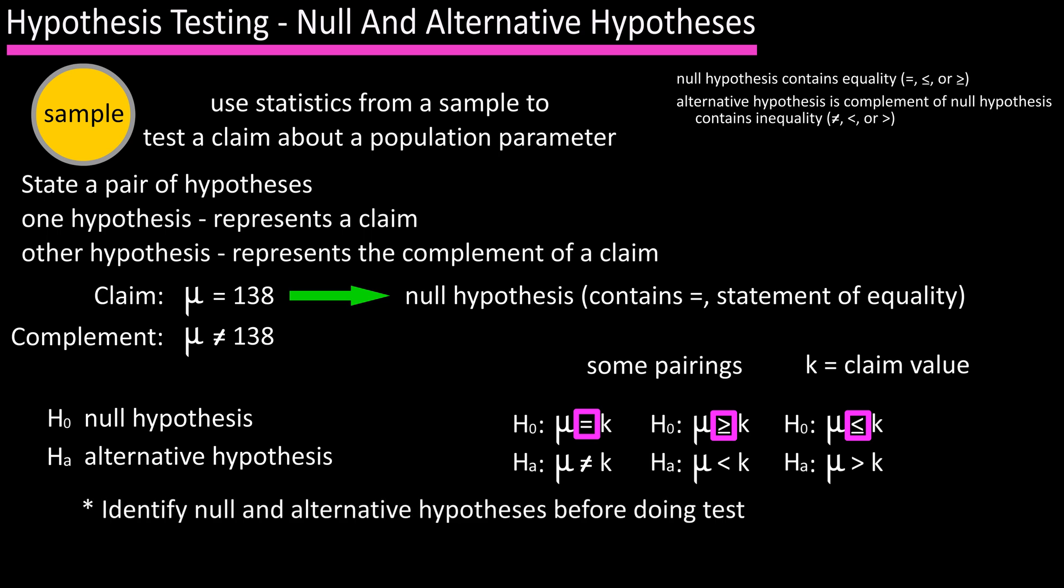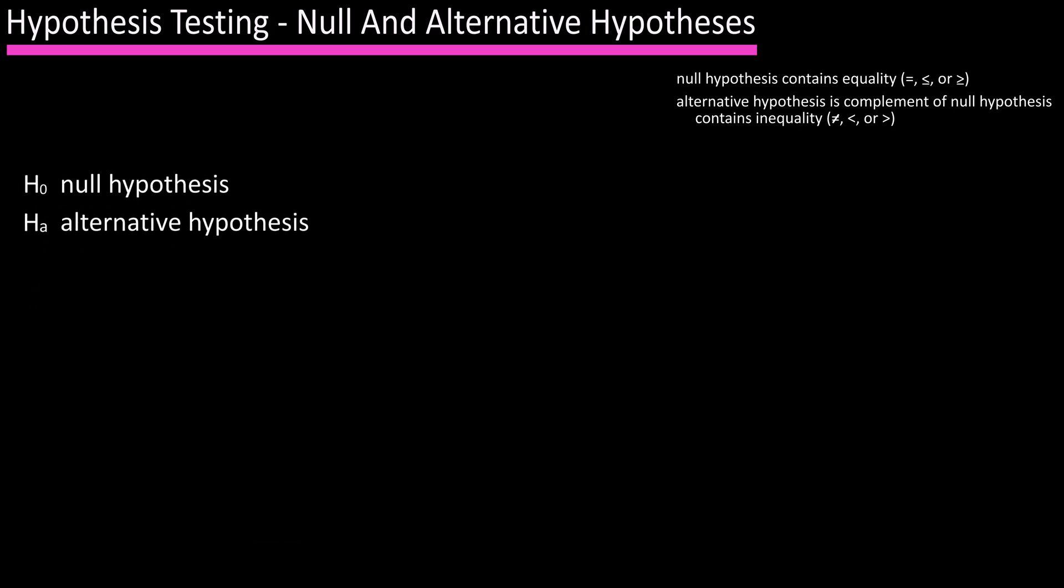It's important to identify the null and alternative hypotheses before actually constructing the testing, and the tip is that it is sometimes easier if you focus on the claim. So write the claim out mathematically first. All right, let's go through a couple of examples.